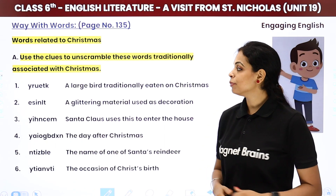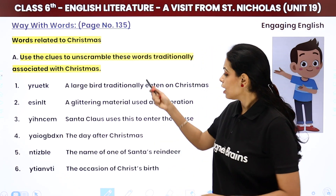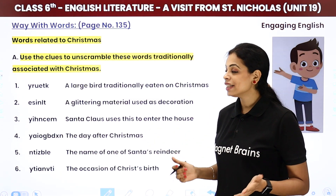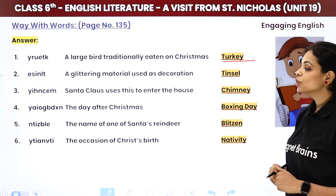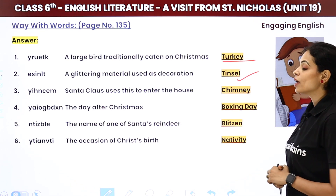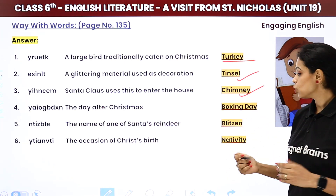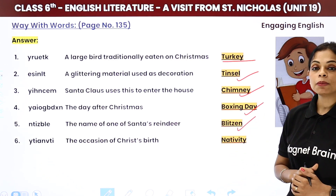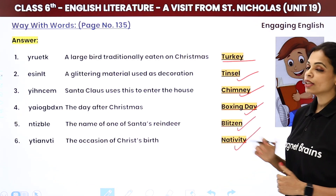Now words related to Christmas in the vocabulary section. You have jumbled words with clues. A large bird traditionally eaten on Christmas — that is a turkey. A glittering material used as decoration — that is tinsel. Santa Claus uses this to enter the house — chimney. The day after Christmas — Boxing Day. The name of one of Santa's reindeer — Blitzen. The occasion of Christ's birth — Nativity. These are important; questions can come from these.